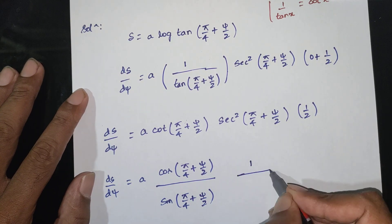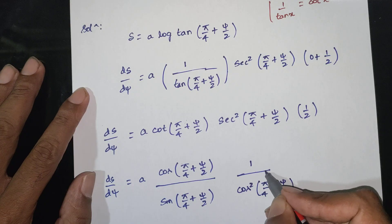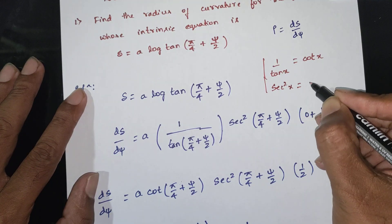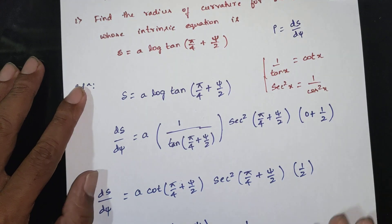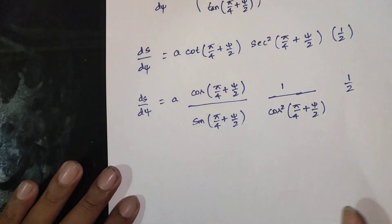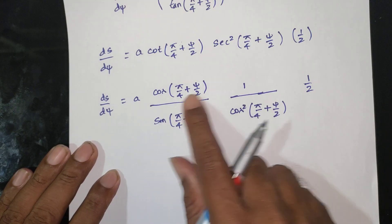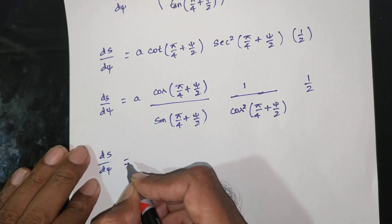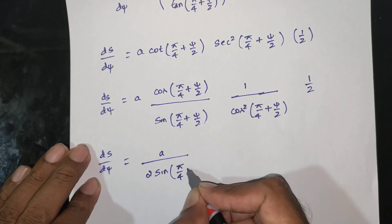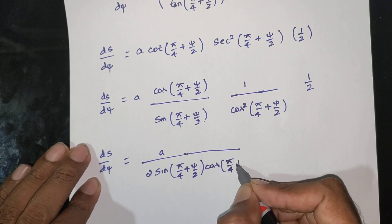The sec² term is 1/cos²(π/4 + ψ/2). We cancel cos²(x) with 1/cos²(x), and the factor of 1/2 remains. This gives us 1 over 2·sin(π/4 + ψ/2)·cos(π/4 + ψ/2).